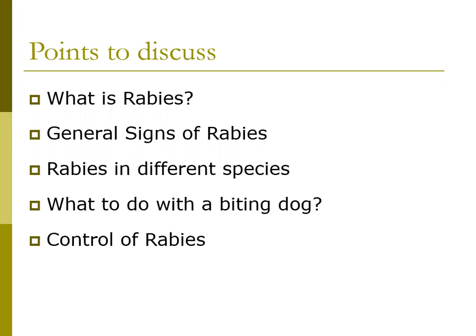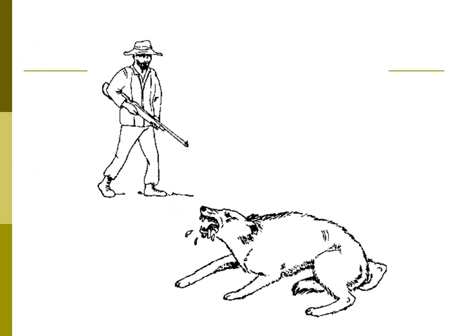If rabies occurs in the horse, it will show the furious type of disease — it will kick and bite and show signs similar to colic, and the animal will die after paralysis of the back legs. In the camel, the signs of rabies are similar to those shown by a male camel in rut, which is a breeding condition in male camels.